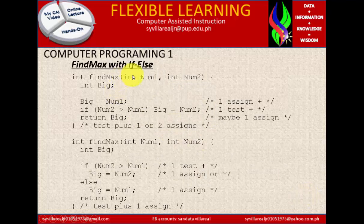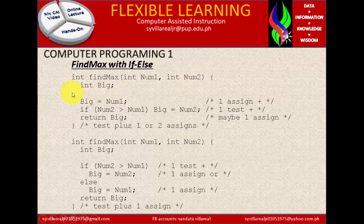Find max with if-else. Integer find max int num1, int num2. So we have two variables, num1 and num2. We have integer big as the third variable. Find max is a function call. And these variables num1 and num2 are inside of the find max function call. Now big is equal to num1. If num2 is greater than num1, then big is equal to num2. If the decision is considered to be true from num2 is greater, then big is equal to num2.